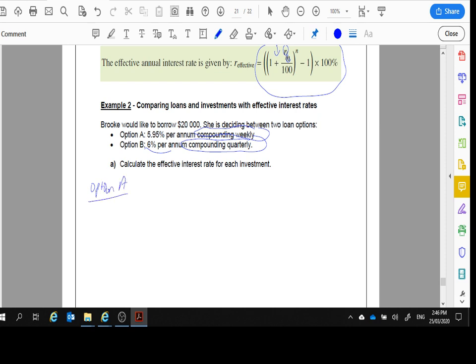Option A, the effective interest rate will equal - using the rule here - 1 plus 5.95 divided by 52 (since it's compounding weekly and there's 52 weeks in a year) divided by 100, all to the power of 52, minus 1, then times 100%. When we calculate this, we get 6.13%. Now we'll do Option B.